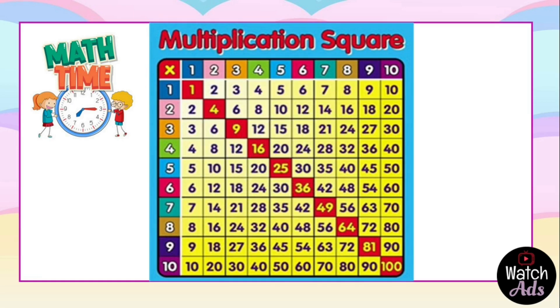Before we start talking about the visibility rules, there is one requirement that is needed before we proceed to this topic, and that is the multiplication square. It's very important that you master the multiplication square, or the multiplication table, for you to further understand.